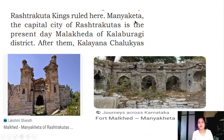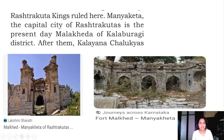Manya Keta, now called Malakeda, was the capital city of the Rashtrakutas - present-day Malakeda in Kalburgi district. These are the monuments available in Malakeda, which is in Kalburgi district.